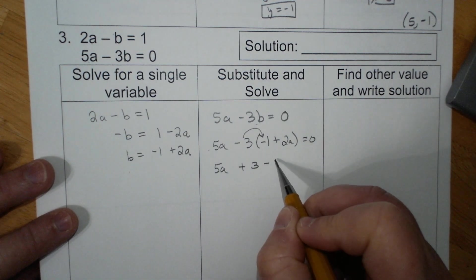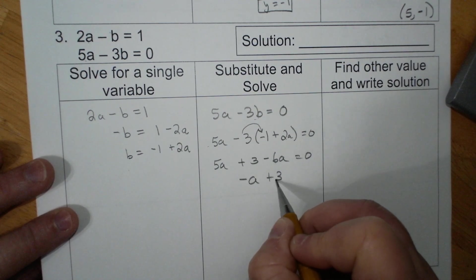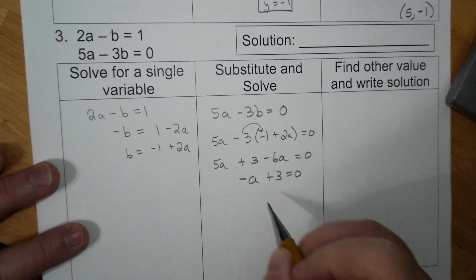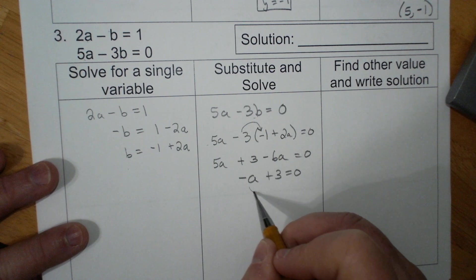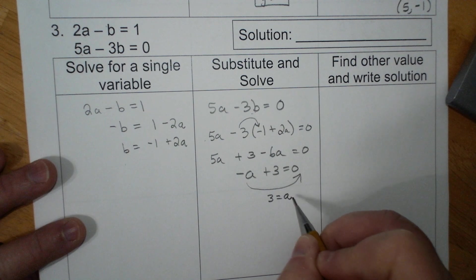Negative a plus 3 equals 0. I'm gonna pull the a to the other side so I have 3 equals a.